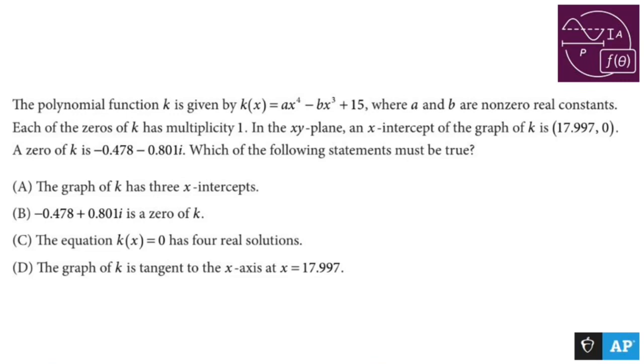The polynomial function k is given by k(x) = ax^4 - bx^3 + 15, where a and b are non-zero real constants. Make sense?